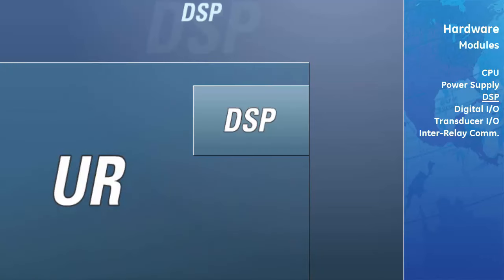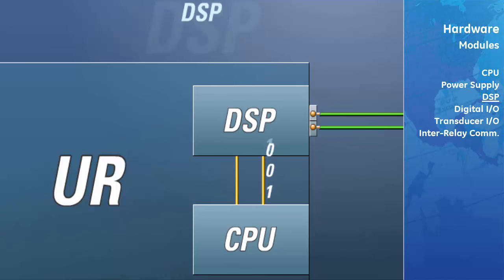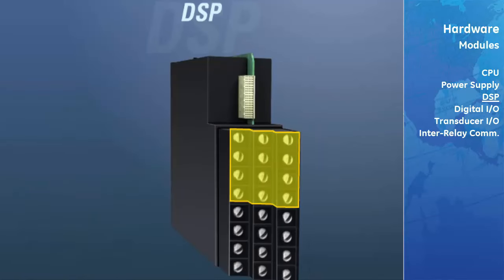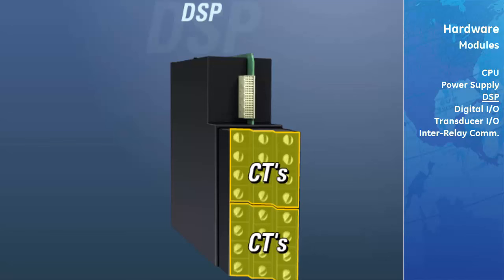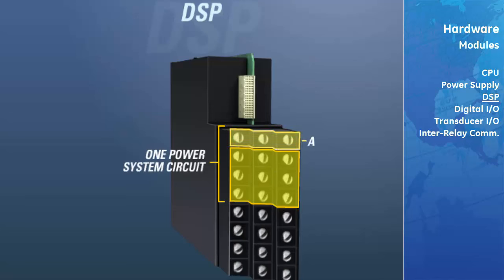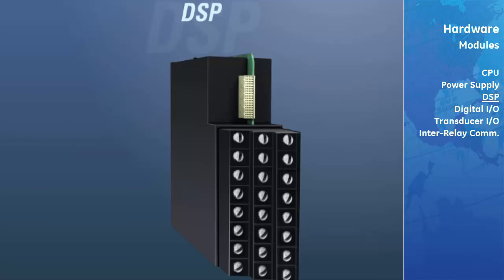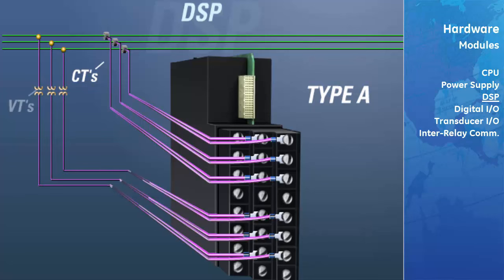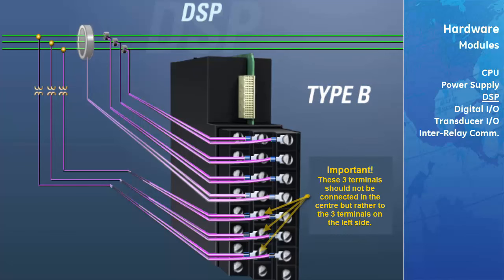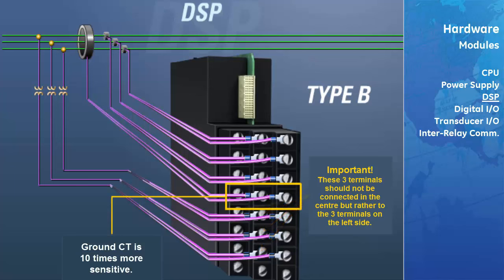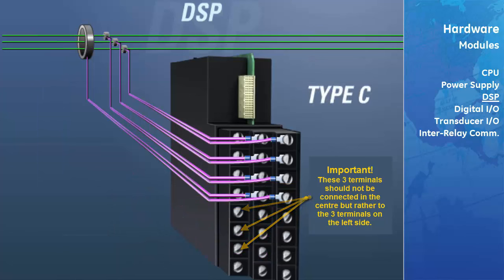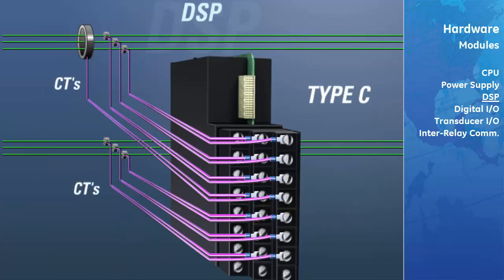The digital signal processor (DSP) module converts current and voltage signals into digital measurements used by the CPU for calculations. Each DSP is split into two banks of four inputs each, usable for CTs or a mixture of CTs and VTs, with each bank dedicated to one power system circuit containing phase A, B, C, and ground inputs. There are five DSP configurations: the A type has CTs in the first bank and VTs in the second; the B type also has CTs and VTs, but the ground CT on the fourth input channel is ten times more sensitive than normal; the C type has CTs in both banks to monitor two power system circuits.